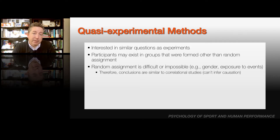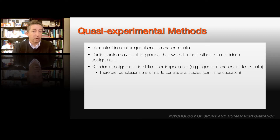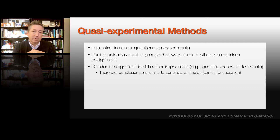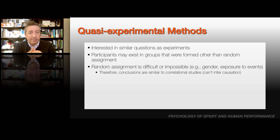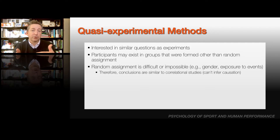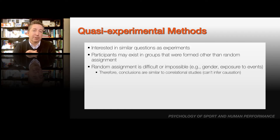There are also quasi-experimental methods. In quasi-experimental methods, participants may exist in pre-existing groups — they're called quasi-experiments because they look like experiments, but those groups were formed other than by random assignment. They may be students assigned to classrooms or people on certain teams within a sports league. Sometimes people exist in groups that simply can't be randomly assigned, like gender, age cohorts, or people exposed to certain events. Because there's not random assignment, the conclusions we draw are very similar to those in correlational studies — we really can't infer causation.